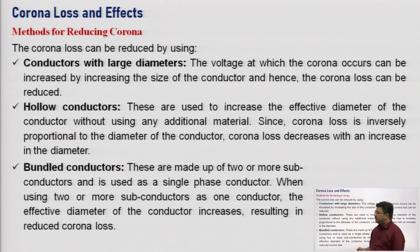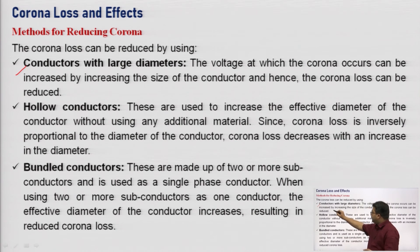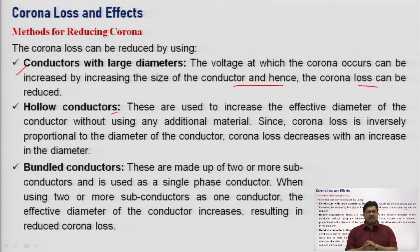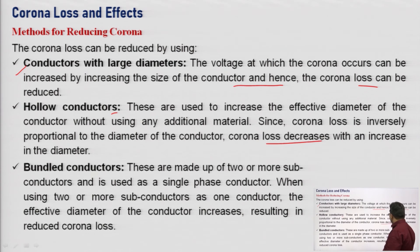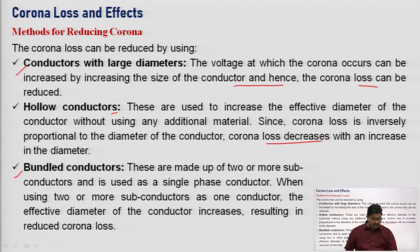To reduce corona loss: use conductors with large diameters — this increases the voltage at which corona occurs and reduces corona loss. Hollow conductors are also used to increase the effective diameter, taking advantage of the skin effect in AC systems. Using bundle conductors instead of a single conductor increases the effective GMR (geometrical mean radius), which also reduces corona loss.